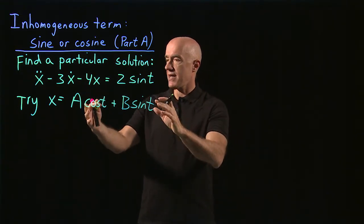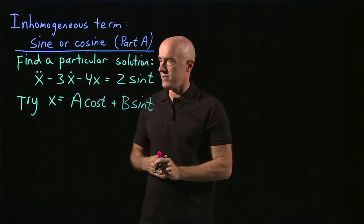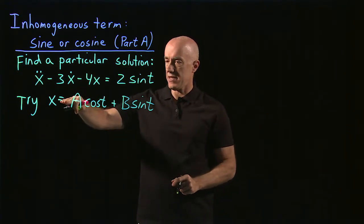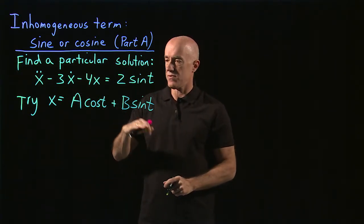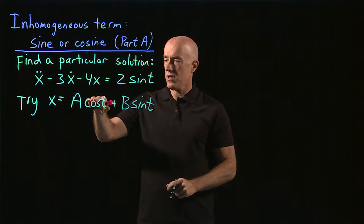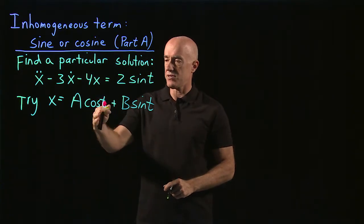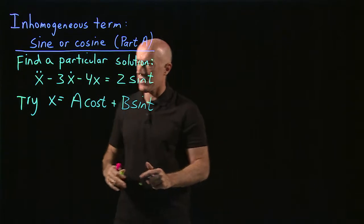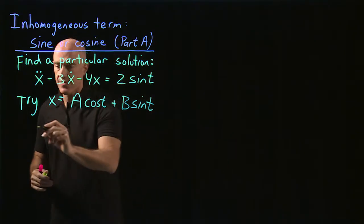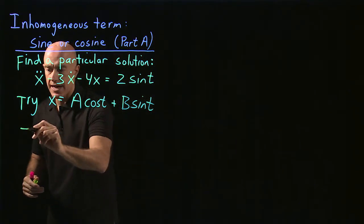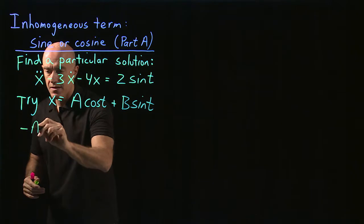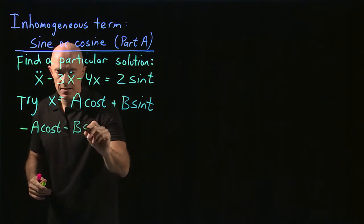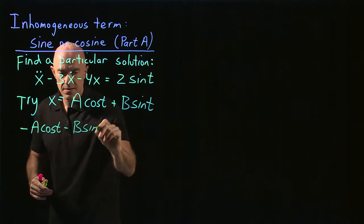We take our ansatz and substitute into the differential equation. We take the second derivative of this. Remember, cosine t becomes minus cosine t, sine t becomes minus sine t. So the second derivative becomes minus a cosine t minus b sine t.